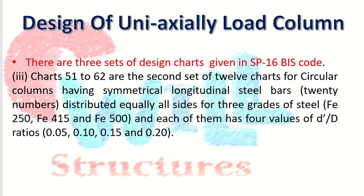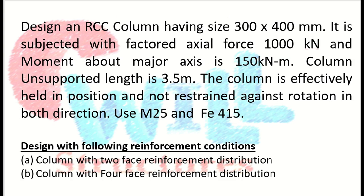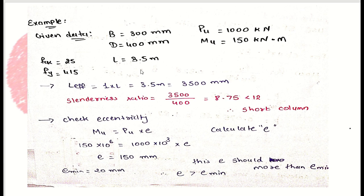Now let's learn how to design a uniaxially loaded column with an example. Design an RCC column of size 300 × 400 mm, subjected to a factored axial force of 1000 kN and a moment about the major axis of 150 kN·m. The column unsupported length is 3.5 m. The column is effectively held in position but not restrained against rotation in both directions. Use M25 concrete and FE 415 steel. Two conditions are given: one with two-face reinforcement distribution, and one with four-face reinforcement distribution.